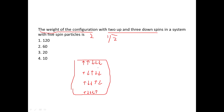Now let the first particle be down and take the second as up. We can have two and three up (rest down), two and four up (rest down), and two and five up (rest down). That gives three more ways. We do not include two and one because that is the same as one and two, since the particles are indistinguishable.